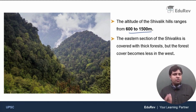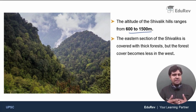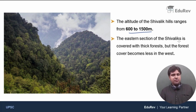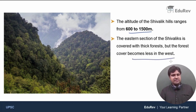Shivaliks are hills, not mountains. The altitude of Shivaliks ranges between 600 and 1,500 meters. The eastern section of the Shivaliks is covered by thick forest, but the forest cover becomes less in the west.